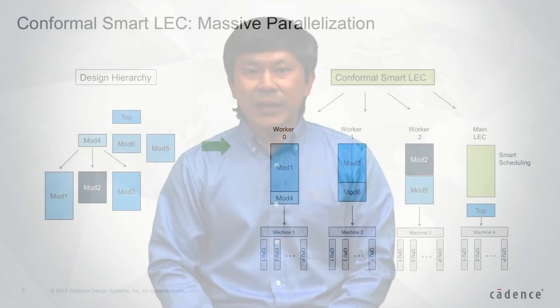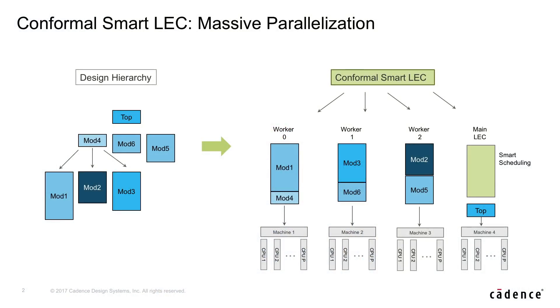Smart Lag is also massively parallelizable. It partitions the design and distributes proof strategies across multiple machines and multiple cores. This delivers the fastest verification turnaround time, even with larger and larger designs.